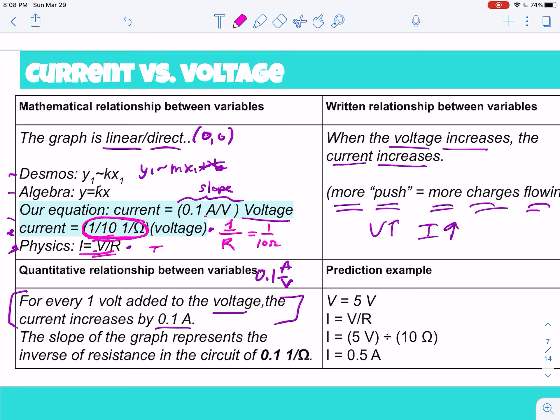That's what we call Ohm's law, okay? Current is directly proportional to the voltage, right? More push means more current and inversely proportional to the resistance. More resistance, less current, that'll be part two, okay? So that's the equation that you're gonna be using. You can see it down here in the prediction example, right?